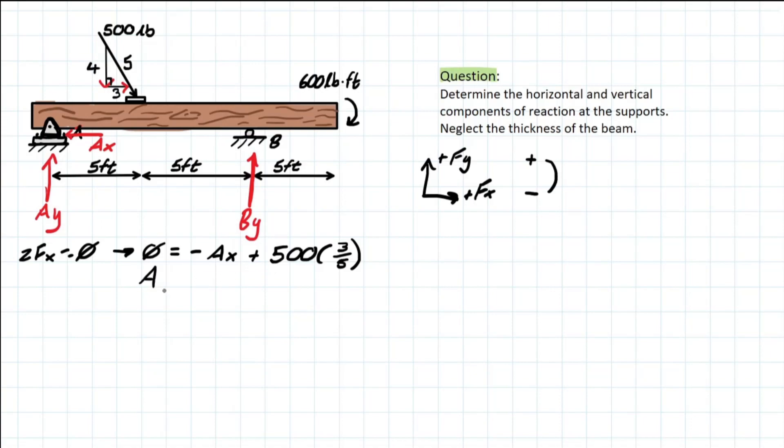So now we simply solve for Ax and this is going to equal 300 pounds. And our sign convention is positive, so that means we assume that A of x is in the right direction. So I can write that here assumed right. So what does that mean? If we solve the problem with a negative sign at the end, that means that we need to flip the direction of this arrow that we drew in the first place for the support reaction.